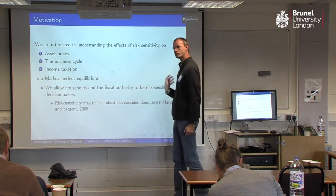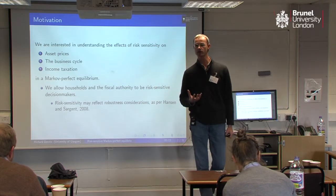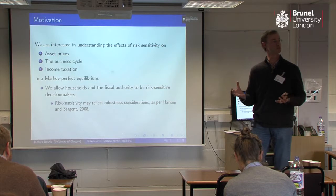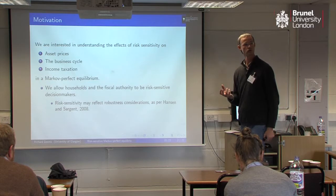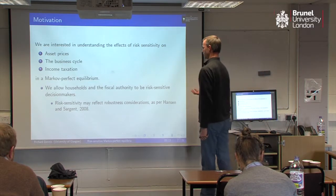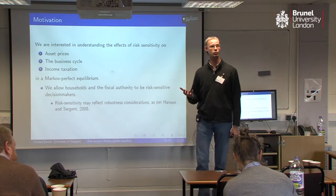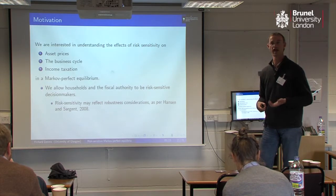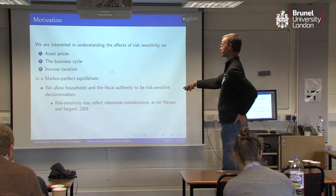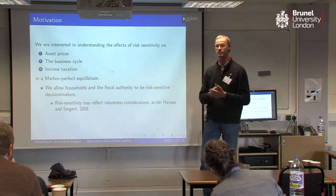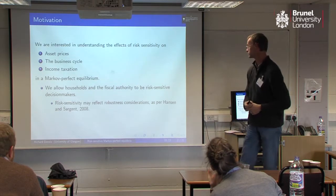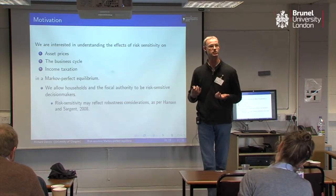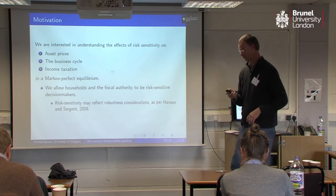Where does this risk sensitivity come from? Well, you can view it as part of individual behaviour, or you can view it as a proxy for something else — model misspecification, aversion to model misspecification. This type of robust control that you sometimes see in the macro literature: in a linear quadratic environment, the analogue in a non-linear environment would be something like risk-sensitive preferences. Models of non-expected utility, models of ambiguity aversion or uncertainty aversion, can also be mapped into this type of risk-sensitive preferences environment. Epstein-Zin preferences are a generalisation on risk-sensitivity that I'm working with.